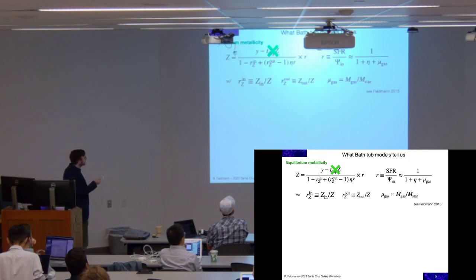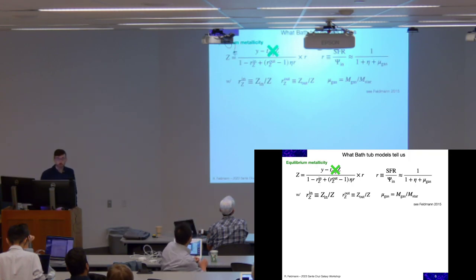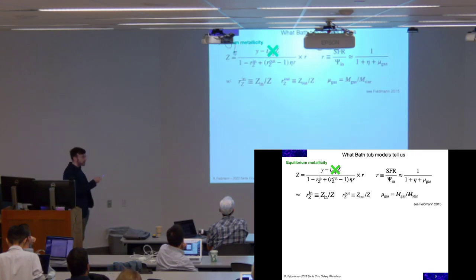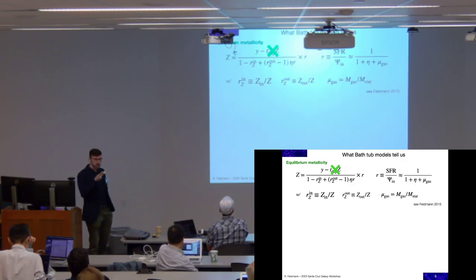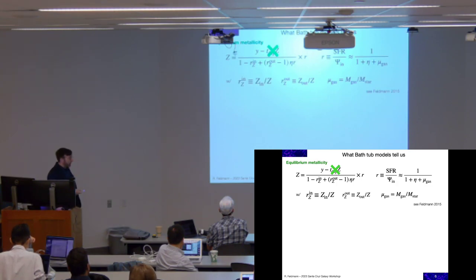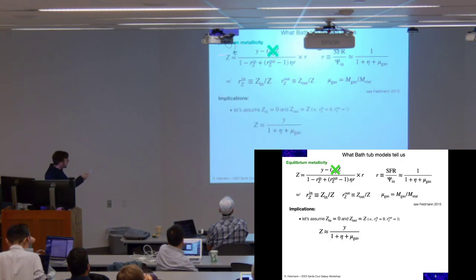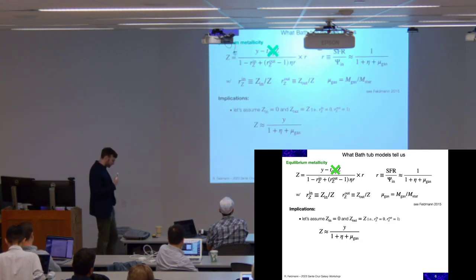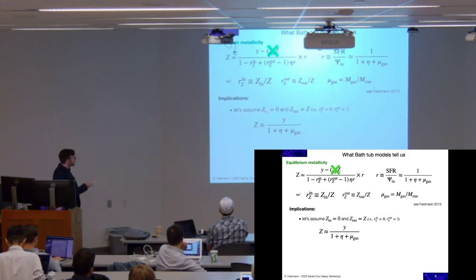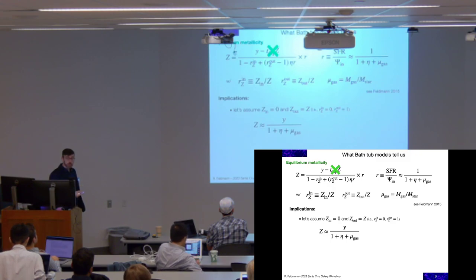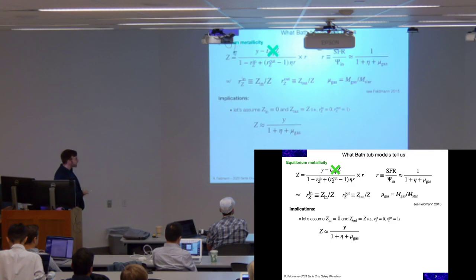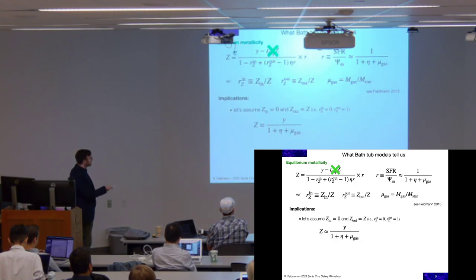Now we can say we have all these terms. It turns out that the Z-dot times depletion time term is typically much smaller than the yield, so we can drop it. We can also think of it as: if the metallicity reaches a steady state, Z-dot is zero, and we can drop that term. This gives us the equilibrium metallicity equation. For a simple scenario where gas inflow metallicity is zero — inflows are pristine — and outflow metallicity equals the ISM metallicity (R_Z_in = 0, R_Z_out = 1), the equilibrium metallicity is proportional to the yield divided by one plus the mass loading factor plus the gas-to-stellar ratio.